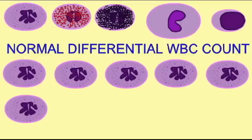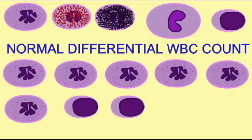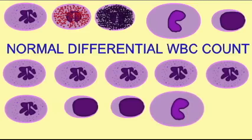A differential white blood cell count is when the five classes of white blood cells are counted. Neutrophils typically compose 50 to 70 percent of the white blood cells in circulation. Their numbers may be elevated in bacterial infections, burns, stress, and inflammation. Neutrophil numbers decrease after radiation and B12 deficiencies.